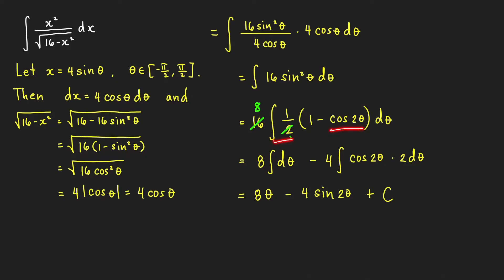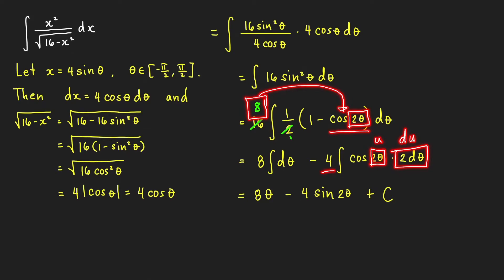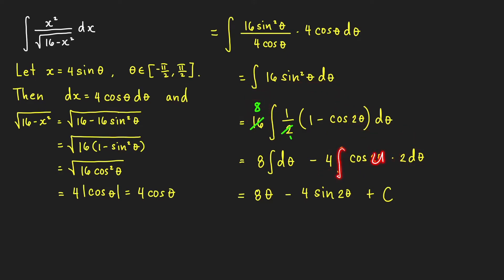For the integral of cosine 2 theta d theta, we let u equal to 2 theta, so du equals 2 d theta. Since our constant factor is 8, we need to find the antiderivative of 8 cosine 2 theta. We multiply by 4, since 4 times 2 gives the constant factor 8. This is now in the form integral of cosine u du, which equals sine u plus c, and our u equals 2 theta.